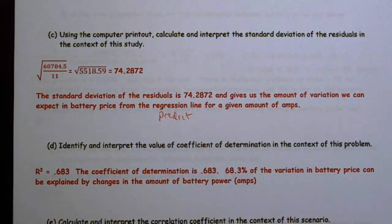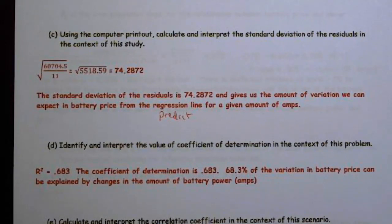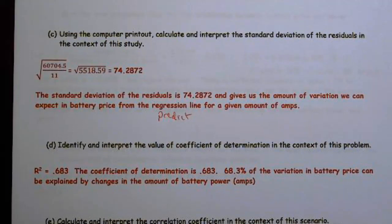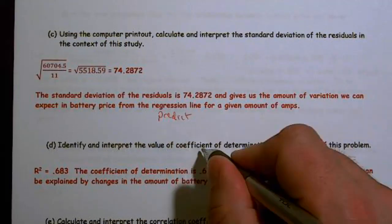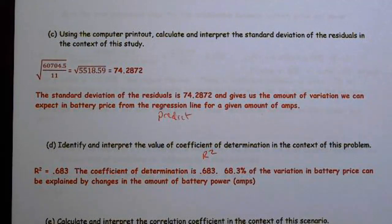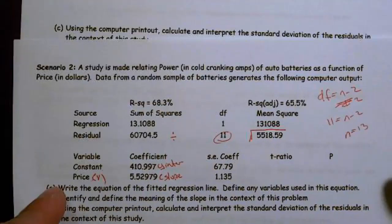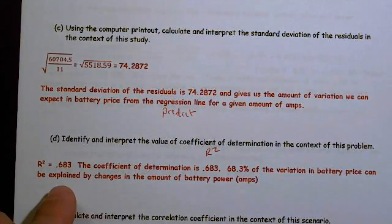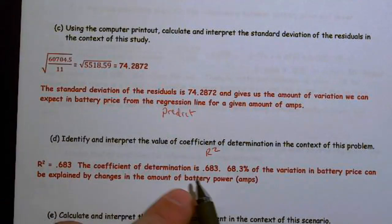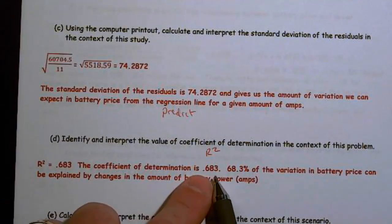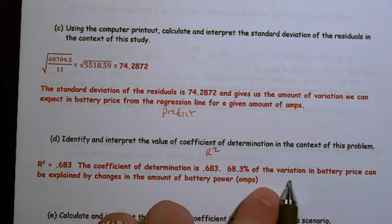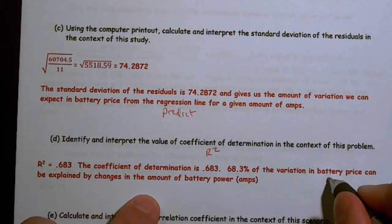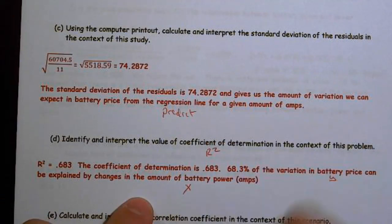Identify and interpret the value of the coefficient of determination in the context of the problem. Well, first off, the coefficient of determination is your R-squared. And they always will put an R-squared adjusted. You can ignore that. We just want the R-squared, which is 68.3. So R-squared 0.683. The coefficient of determination is 0.683. 68.3% of the variation in battery price can be explained by changes in the amount of power. So variation in Y can be explained by X.